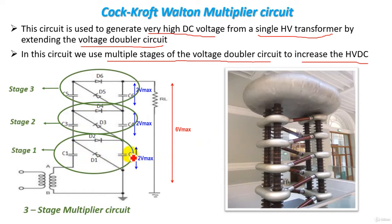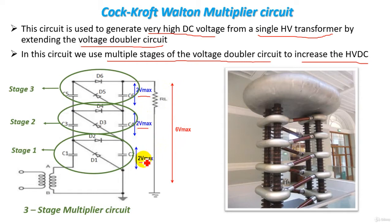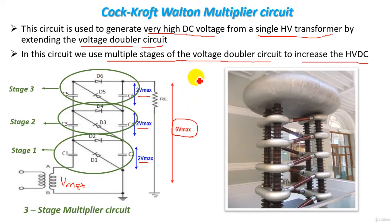For the first stage, the voltage across capacitor C2 is the output of a single-stage voltage multiplier, which is 2V maximum. For the second stage the voltage is also 2V maximum, and for the third stage it is also 2V maximum. So the output voltage of our three-stage Cockcroft-Walton multiplier is 2V + 2V + 2V = 6V maximum, where V maximum is the peak voltage of the transformer secondary.